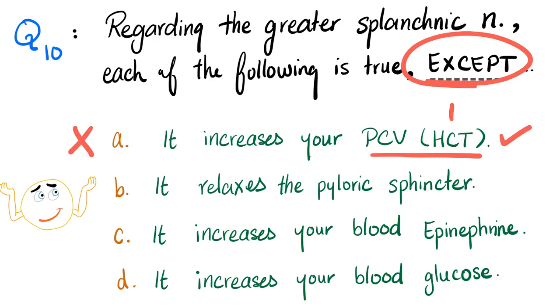B. It relaxes the pyloric sphincter. Okay, I'm running from a tiger. Do I want my GI tract to work? No. So let me relax the wall and contract the sphincter. So this is not true. I should contract the sphincter. This could be the answer. Let's continue. It increases your blood epinephrine. Absolutely. Because it tells your adrenal medulla to secrete epinephrine and norepinephrine. D. It increases your blood glucose. Sure. Let's break down the glycogen in the liver into glucose. So this is not the answer. The answer here is it relaxes because this is not true. It contracts your pyloric sphincter.